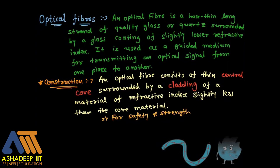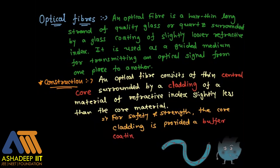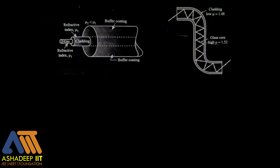For safety and strength, we have a plastic coating around the cladding. So the structure looks like this: there is a core, there is cladding, and there is a buffer coating around it.